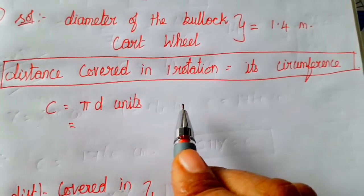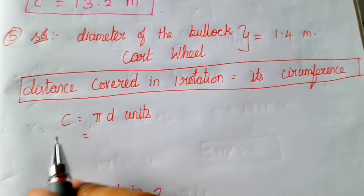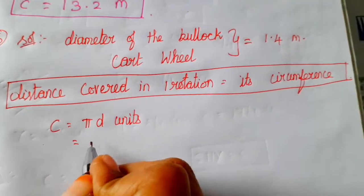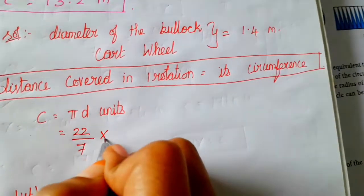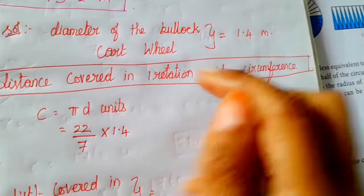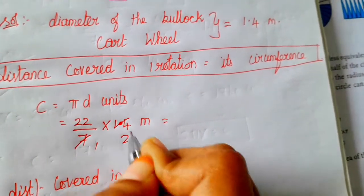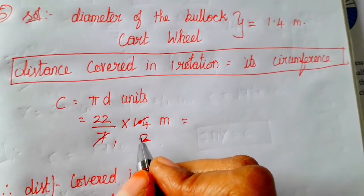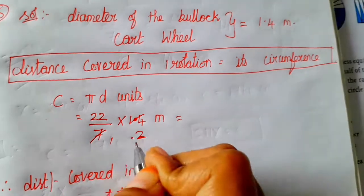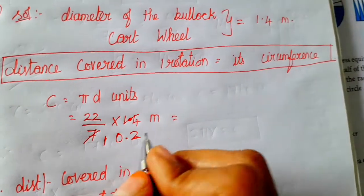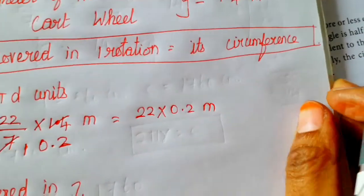1 rotation is the circumference. Circumference C is equal to pi times d. Pi value is 22 by 7, into d which is 1.4. So 22/7 × 1.4 — cancel 7: 1.4 divided by 7 gives 0.2. So we have 22 into 0.2 meter.